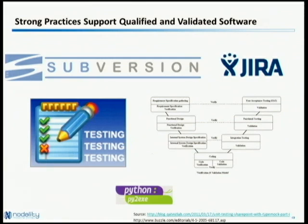Behind all of this we have strong software engineering practices: revision control, bug tracking, and automated unit and regression testing. Some people in bioinformatics have bemoaned the lack of good software engineering in the field, and this is something we take very seriously because ultimately we develop software used in clinical tests. We support these things with strong validation plans and use Py2EXE to freeze our code — our auditors have been satisfied with the way we describe that.